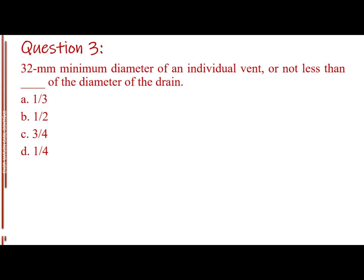Question number three. 32-millimeter minimum diameter of an individual vent, or not less than blank of the diameter of the drain. Letter A, one-third. Letter B, one-half. Letter C, three-fourths. Letter D, one-fourth. The answer is letter B, one-half.